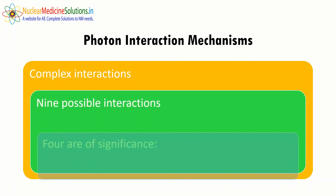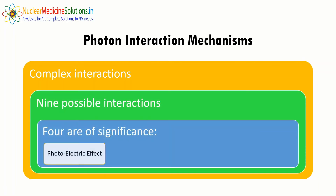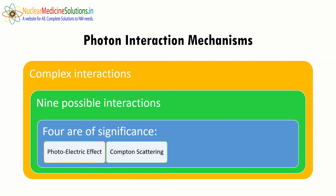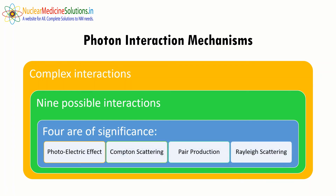Therefore photon interaction is more complex. There are nine possible interactions, of which the significant ones include the photoelectric effect, Compton scattering, pair production, and Rayleigh scattering. We will also discuss Thomson scattering and photonuclear reactions. These four are of primary significance among the nine possible interactions of photons with matter.